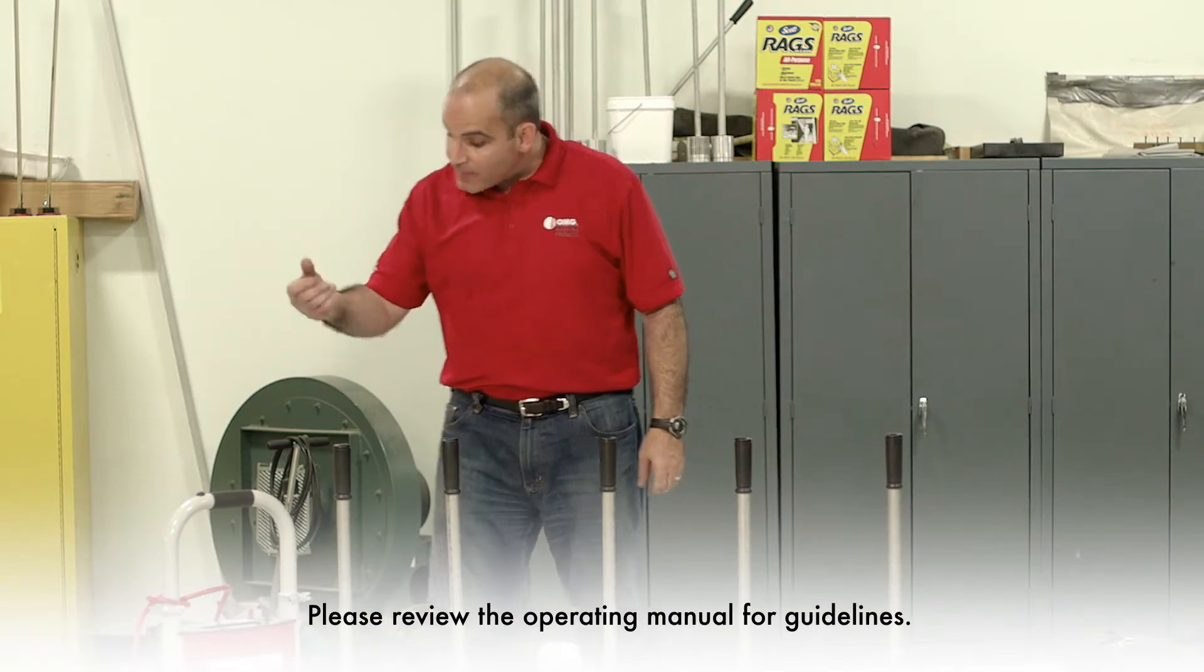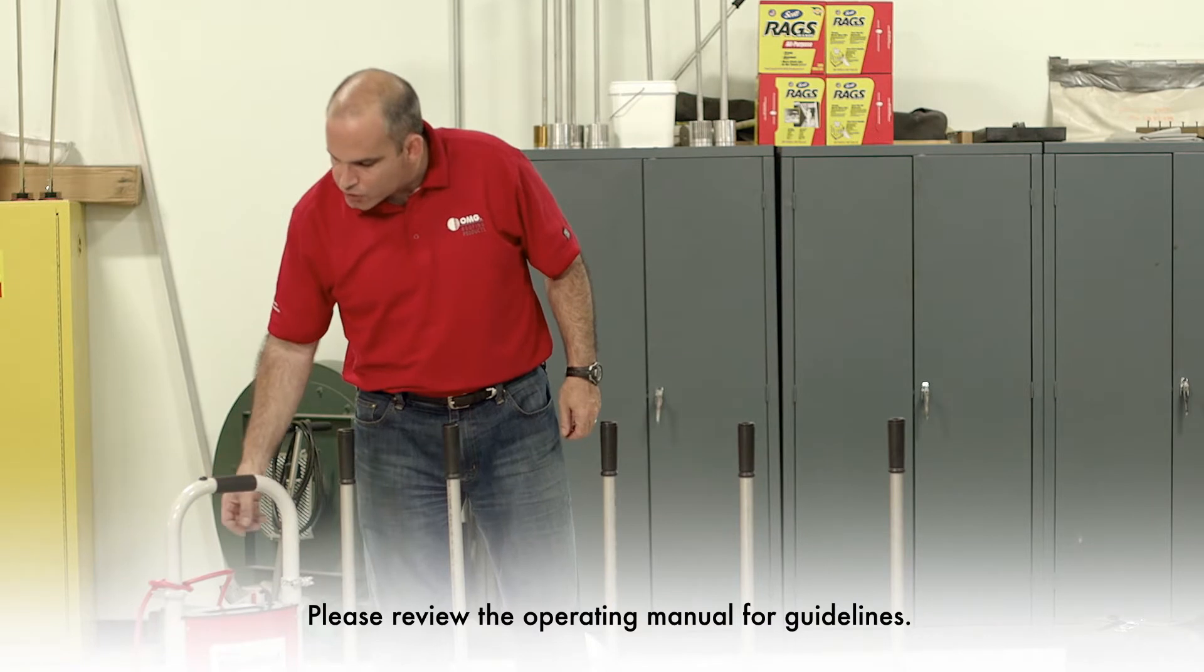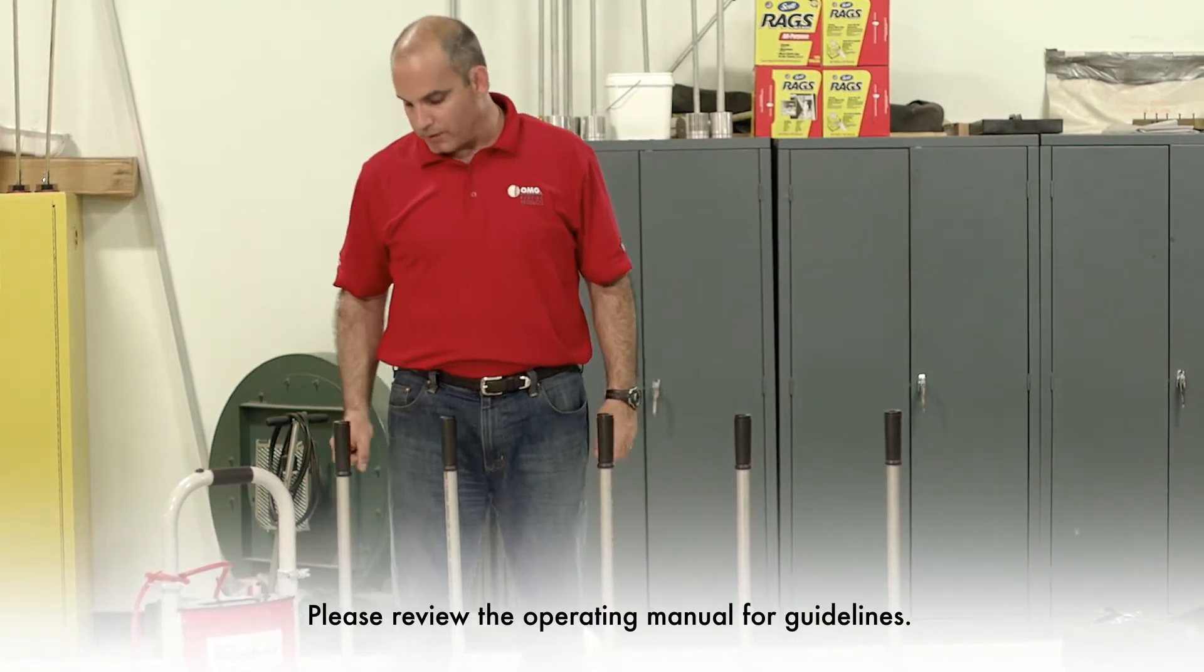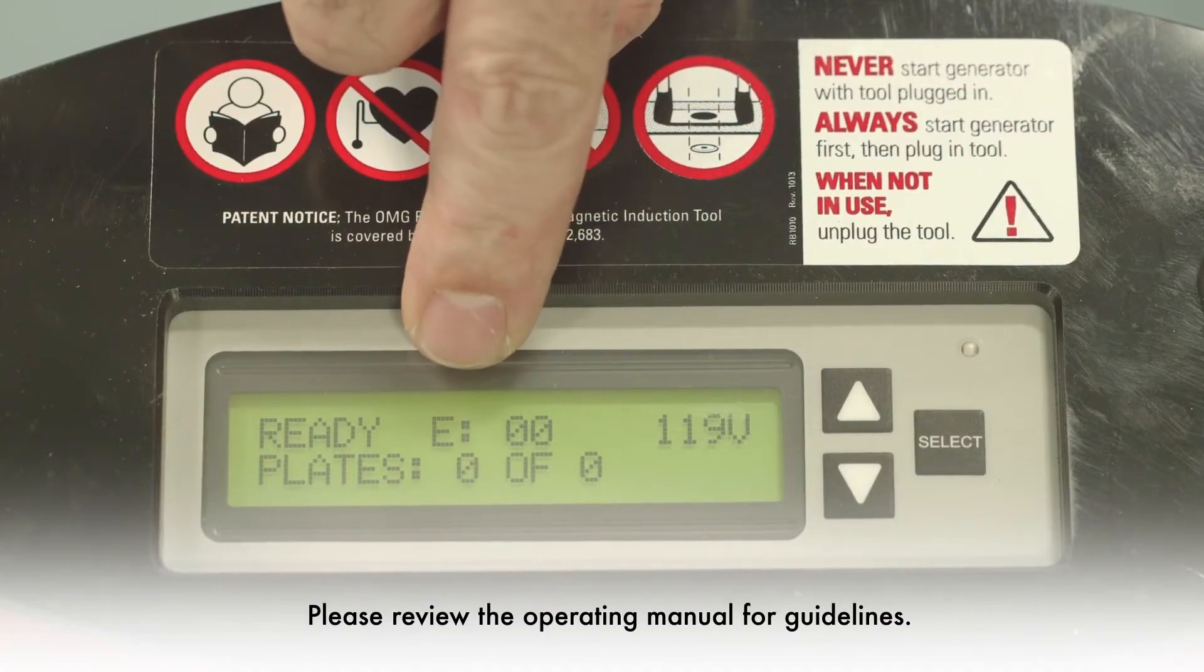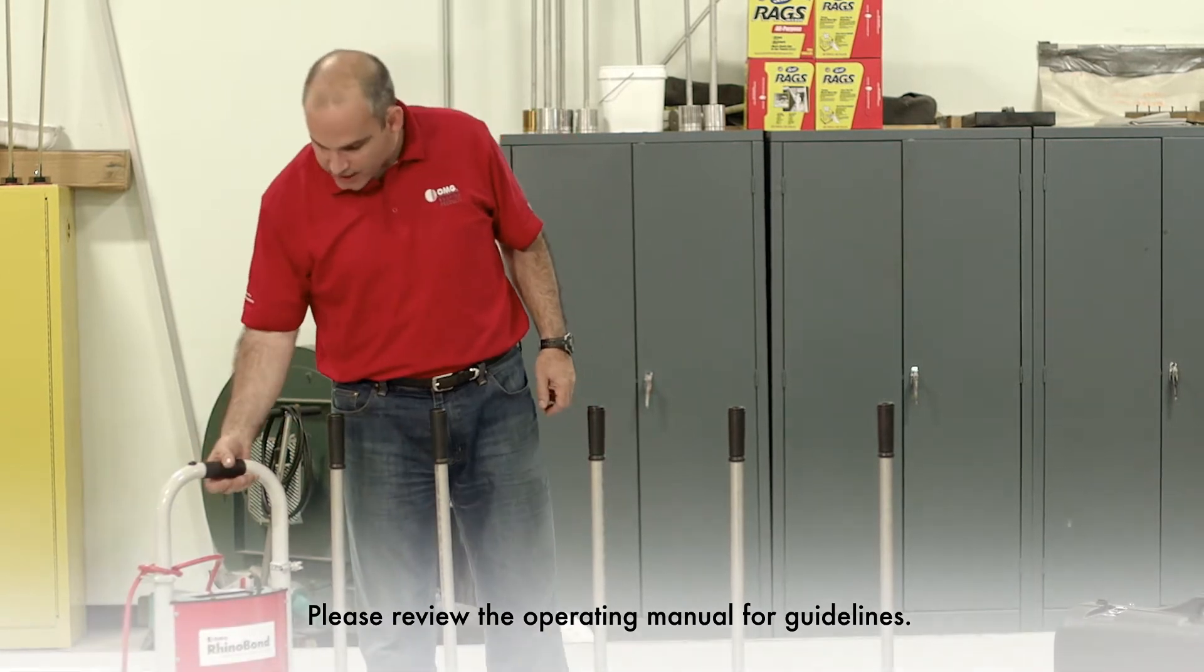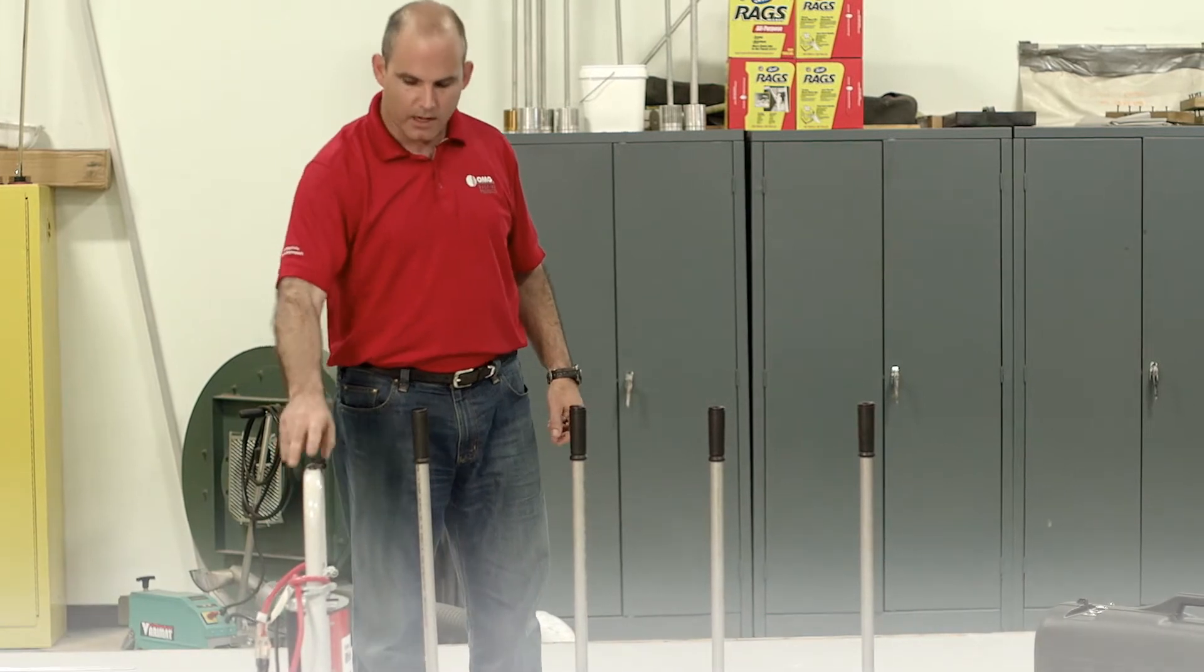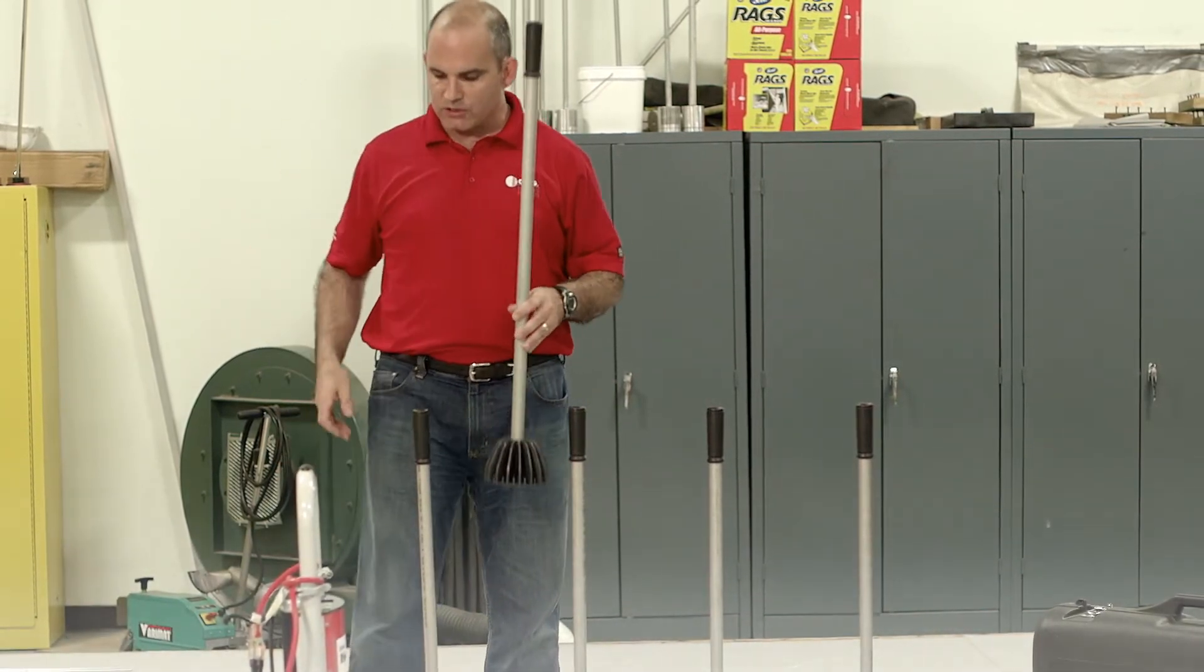All right, now it's time to perform each one of our calibration welds. With our RhinoBond tool properly plugged into its power source, we'll select the energy setting corresponding with our first sample weld. In this case, it's a zero. So we'll set the RhinoBond tool to energy setting double zero, hit the select button to lock that energy selection in, center our tool over our red mark, hit our activation button, and in 5 seconds the tool will be done.